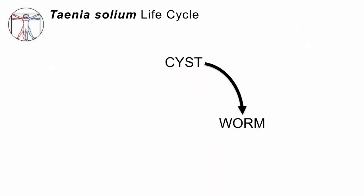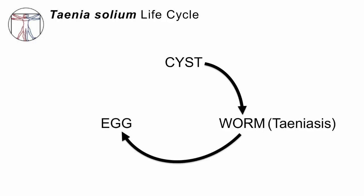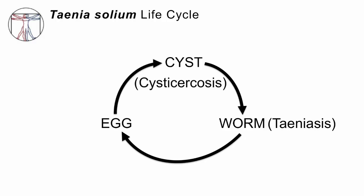Take a moment and get this integrated into your memory. If you eat a cyst, you'll get a worm — that's called teniasis. And that worm, in return, will create eggs, which if consumed will cause cysts — that's called cysticercosis. Humans get teniasis; either humans or pigs can have cysticercosis.